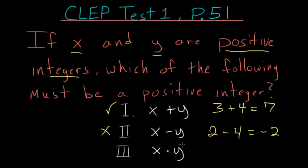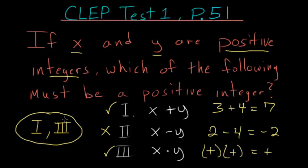And then x times y, we know that if we multiply a positive number by a positive number, we always get back a positive number. So number 3 is right as well. Our solution is that number 1 and number 3 must both be positive integers.